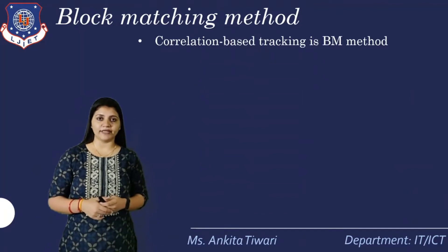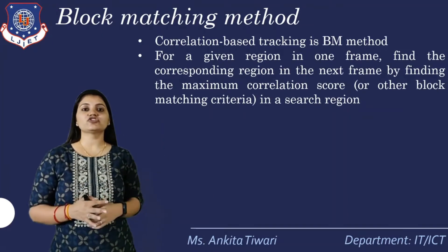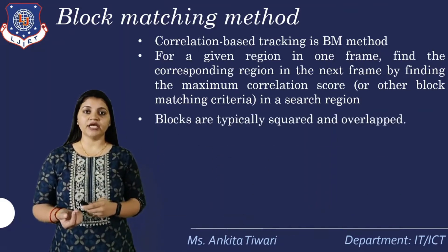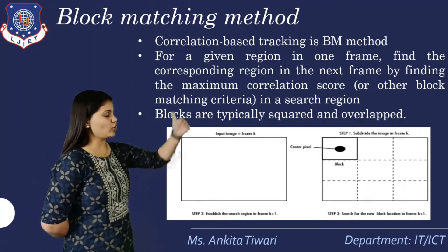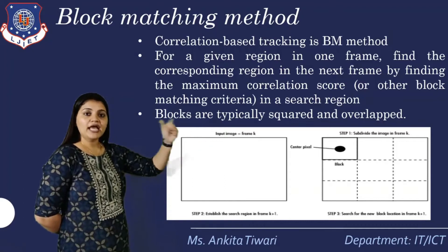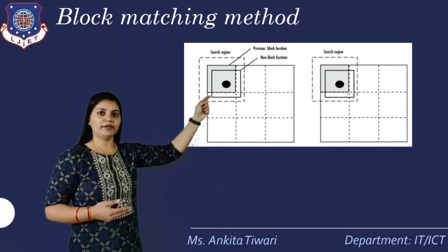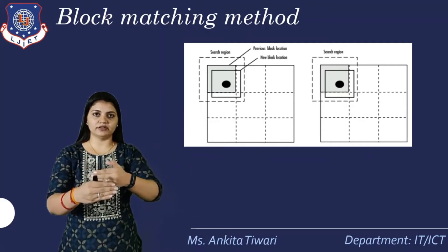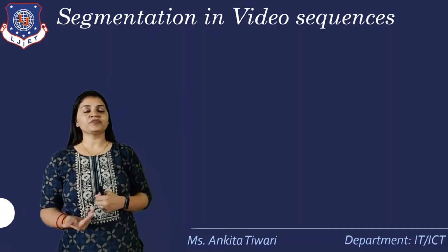What is the block matching method? Correlation-based tracking is the block matching method. For a given region in one frame, we find the corresponding region in the next frame by finding the maximum correlation score within a search region. The blocks are typically squared and overlapping. The block is divided into sub-parts and we take the center point. With the next block matching using the correlation method, we take the distance one-to-one — one block, then in motion the parallel another block, then the third block. This is how the block matching method is done and how images are segmented to get the matching.